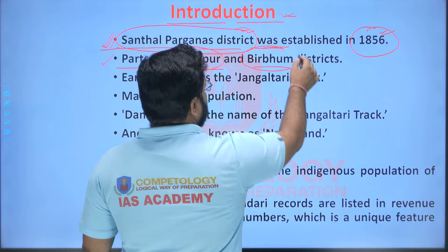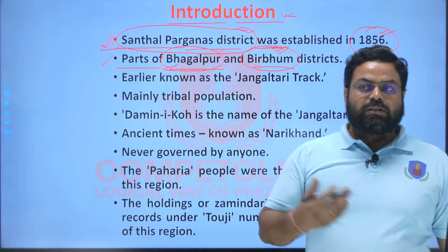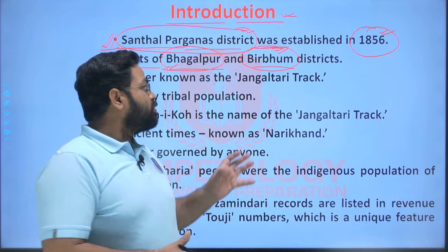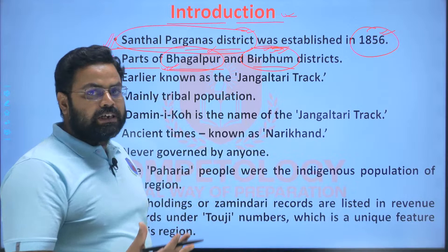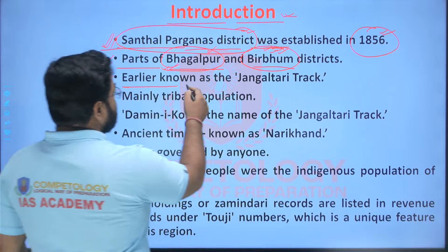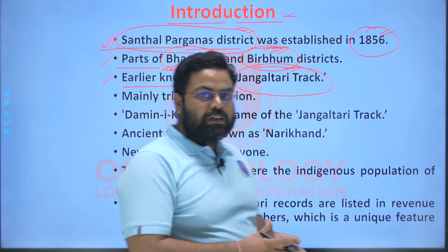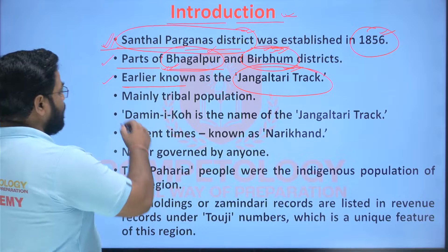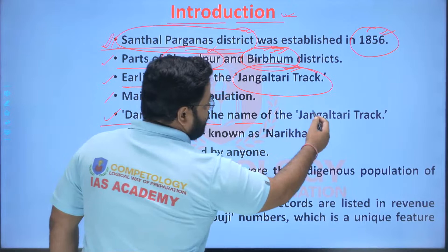At that time there was no separate state of Bihar or Bengal — those two states came into existence in 1912. Before that the whole territory was a single Bengal presidency. From these two districts, portions mainly inhabited by the tribal population were carved out as a separate non-regulation district of Santhal Pargana. This region was earlier known as Jungle Thari Track — meaning those densely forested regions where tribal people were living in the forests.